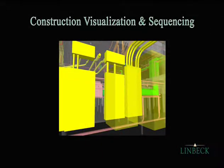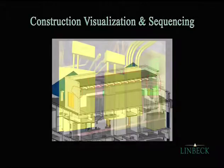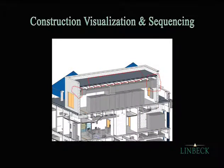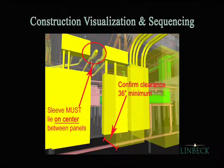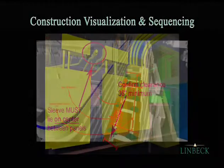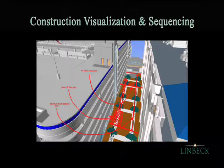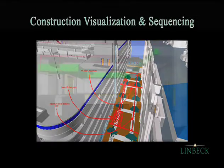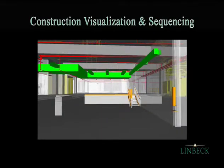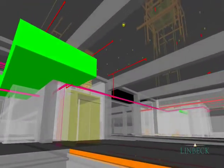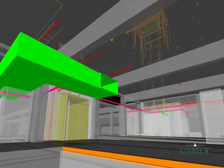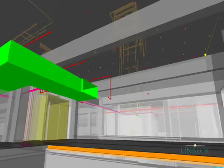BIM allows significant advances in construction visualization. The model is often used to clarify design intent in discussion with the design team or to communicate complex installations to work crews. The model is used to investigate constructability issues, especially regarding site utilization in three dimensions. The model is also used to illustrate installation sequences and visualize the schedule, thus creating a 4D model. This can show very small, specific areas or large, big picture scope.